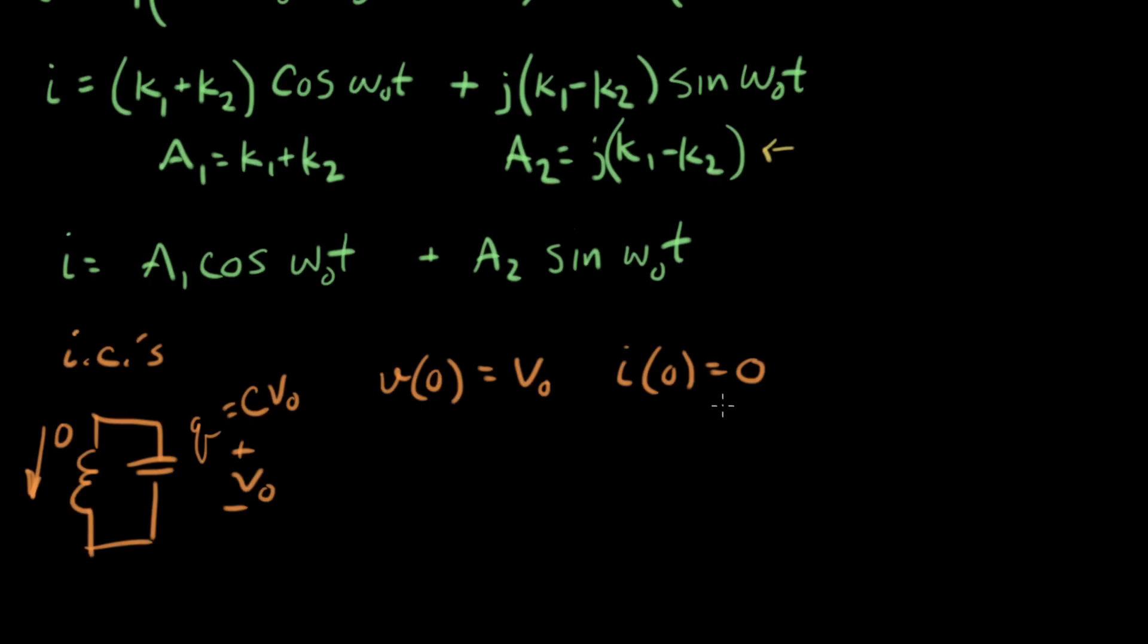Because this is a second order equation, we need to have two initial conditions for the variable that we're studying here. We're studying I. Right now we have one initial condition for I, and because we have a second order equation, that means we need two ICs for I.